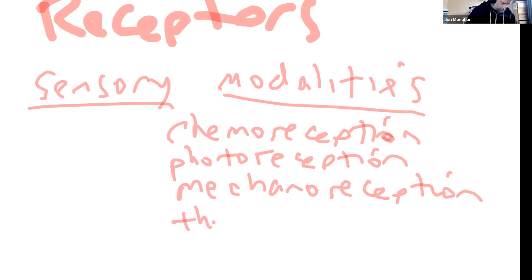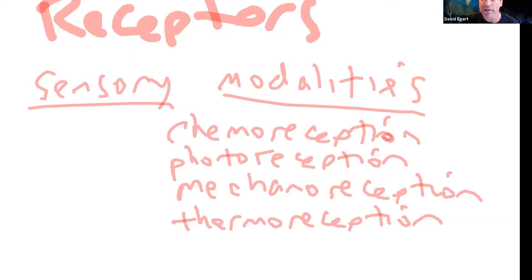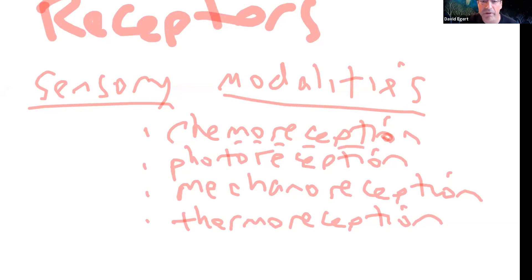There's also thermoreception — detecting temperature. The scientist who just won the Nobel Prize worked on figuring out exactly what these receptors are and how they work — what channels open and close in response to heat and cold. Some of those receptors also respond to chemicals as well as temperature: capsaicin from hot peppers can turn on receptors that also respond to heat, and menthol can turn on receptors that respond to cold. Taste would be here under chemoreception — just detecting different chemicals in your saliva, whether it's a sugar molecule or an alkaloid.